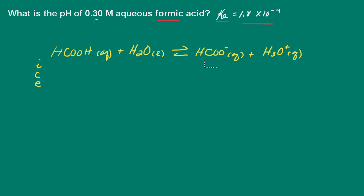Here we're asked, what is the pH of 0.3 molar aqueous formic acid? Formic acid is a weak acid, and here we're given the acid dissociation constant, which is equal to 1.8 times 10 to the negative 4.